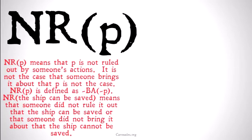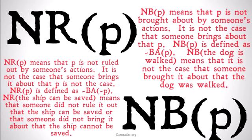RO is 'ruled out,' BA is 'bring about.' NR means that P is not ruled out by someone's actions — it is not the case that someone brings it about that P is not the case. NRP is defined as not BA not P. 'NR, the ship can be saved' means someone did not rule out that the ship can be saved, or did not bring it about that the ship cannot be saved — basically, the ship can still be saved. NB means that P is not brought about by someone's actions. NBP is defined as not BAP. 'NB, the dog is walked' means it is not the case that someone brought it about that the dog was walked.